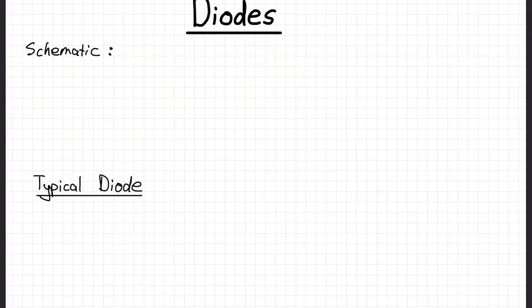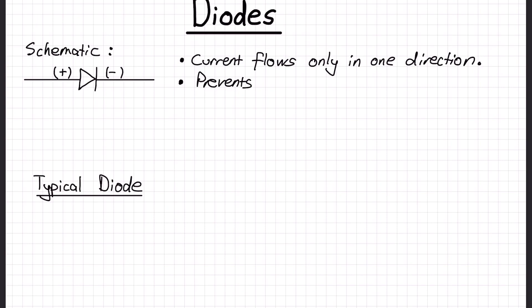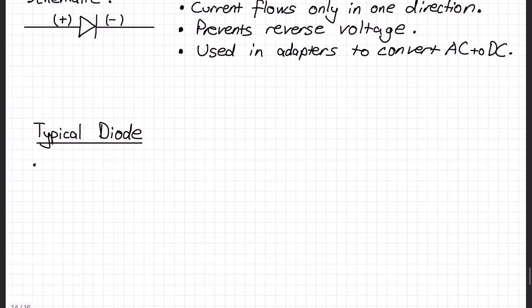Diodes. The schematic of a diode looks similar to LEDs because LED is also some sort of a diode. We have a plus side, anode, and minus side, cathode. Diodes let current flow only in one direction, from plus to minus side. It prevents reverse voltage and also protects your circuits. It is mostly used to convert AC to DC, which we will be looking at in the next slide.